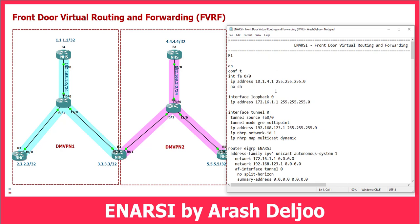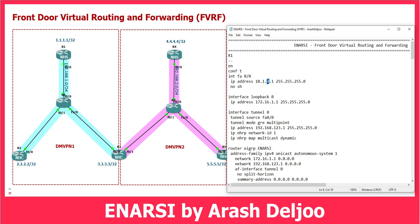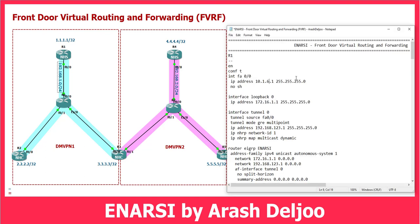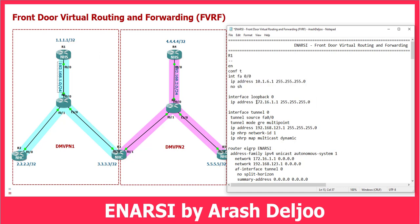We will use this notepad file, but we should change some features here. In Router 1: enable, conf t, interface FastEthernet 0/0. The IP address is 10.1.6.1 255.255.255.0, because this link is between Router 1 and Router 6. Then no shutdown. Also we have one interface loopback 0 with IP address 1.1.1.1 255.255.255.255.